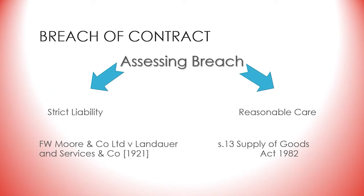Note however what is known as the de minimis rule, which means that microscopic deviations from the promised performance will not constitute breach — unless they come under a statutory duty to perform absolutely. See sections 13 to 15 of the Sale of Goods Act 1979 and sections 9 to 18 of the Consumer Rights Act 2015, on obligations as to description, fitness for purpose, satisfactory quality, and correspondence with sample in sales of goods contracts.